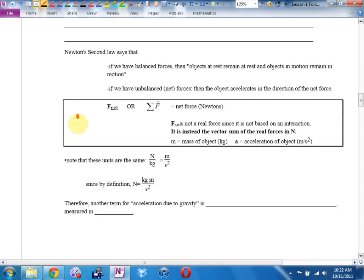Instead, we're going to move to Newton's second law. So Newton's second law says that if we have balanced forces, then objects at rest remain at rest, and objects in motion remain in motion. If we have unbalanced forces, actually, cross out Newton's second law. Newton's first law says that if we have balanced forces, then objects remain at rest, and objects in motion remain in motion. If we have unbalanced forces, then the object accelerates in the direction of the net force.